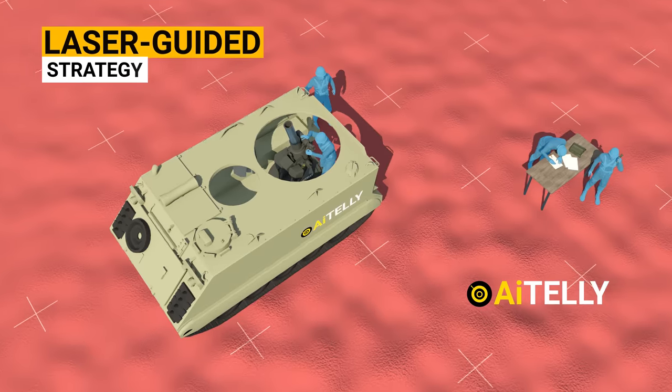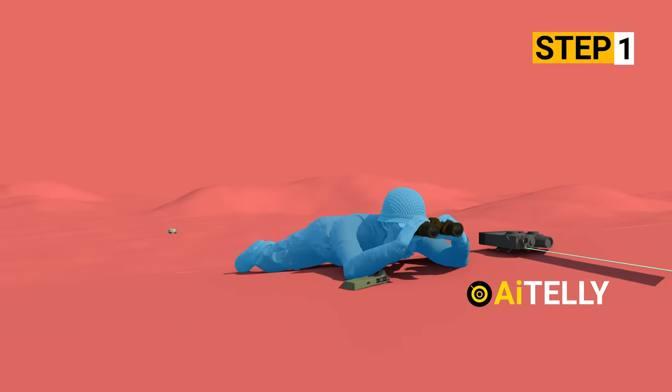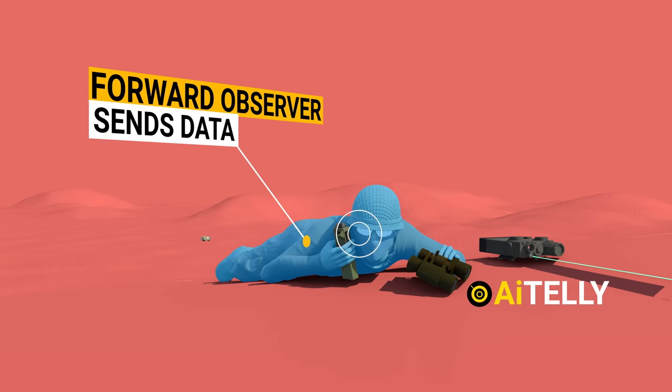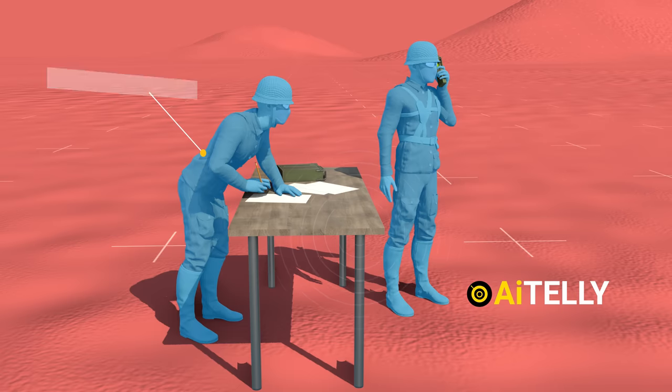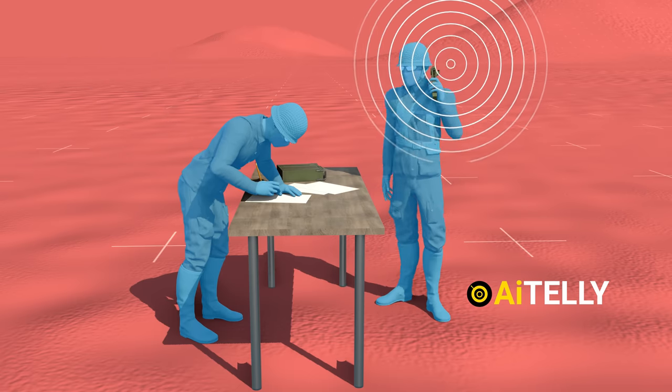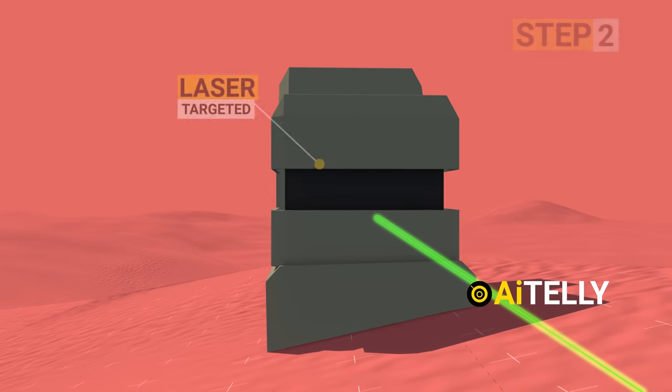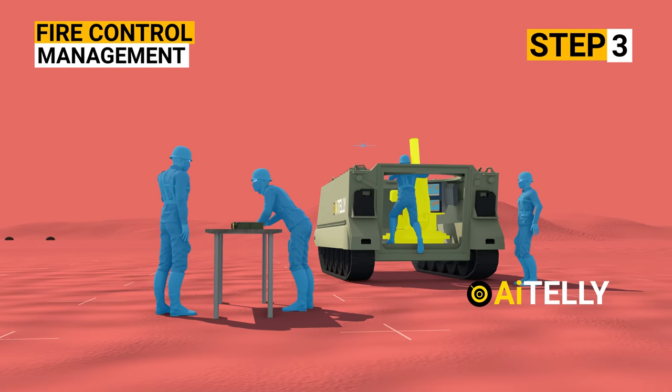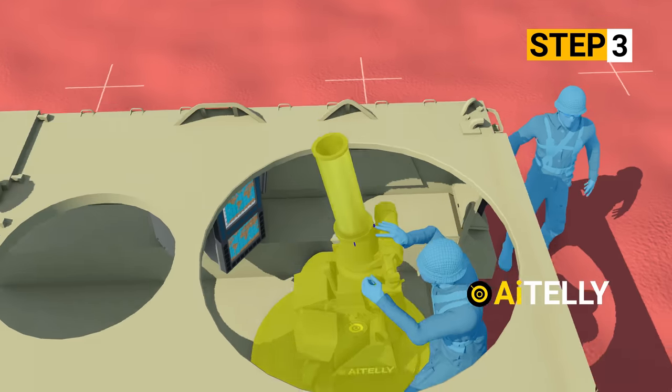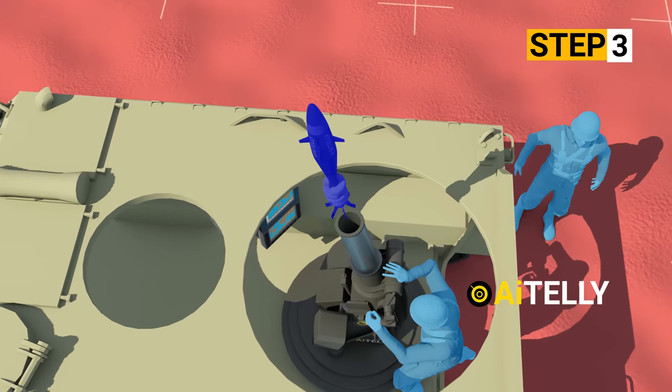Let's now delve into the laser-guided strategy. Step 1: The forward observer communicates with the fire control and command center. Step 2: He precisely laser designates the intended target. Step 3: The fire control and battle management team launches the Iron Sting missile from the platform.